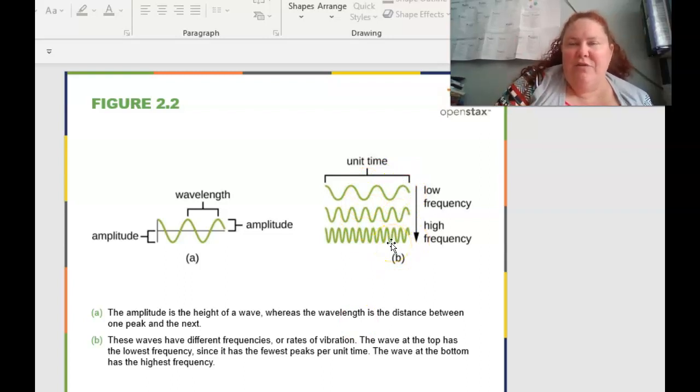These waves have different frequencies, and therefore they have different rates of vibration. The wave at the top here has the lowest frequency, where at the bottom it's a higher frequency. So I kind of think of wavelengths like gnats or bees. The lower ones are like a big old bumblebee, low buzzing, versus a gnat. And that's going to be the higher frequencies.